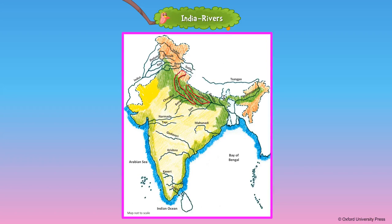The Yamuna originates in the Yamunotri Glacier in Uttarakhand and joins the Ganga in Allahabad or Prayag. The Indus originates near Lake Mansarovar and flows through the Himalayas.